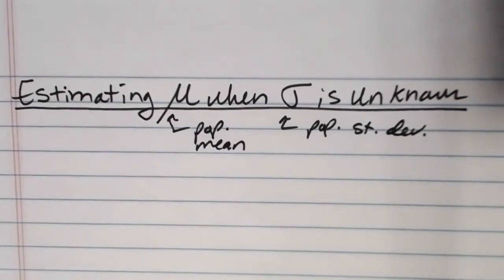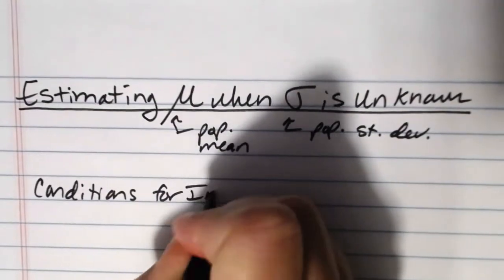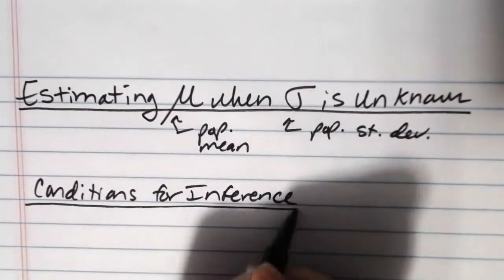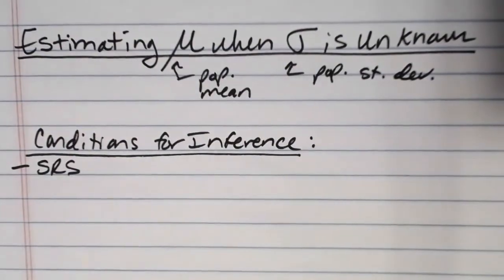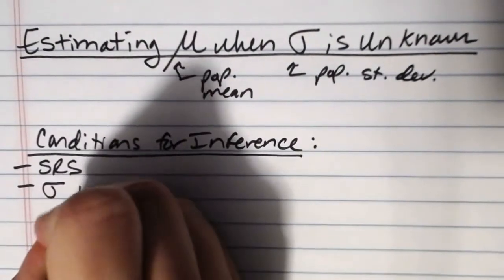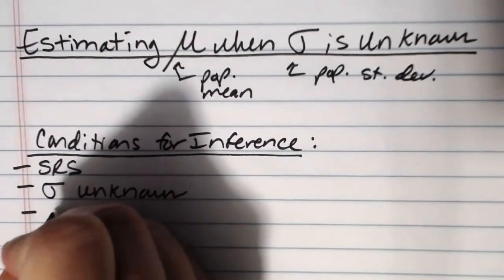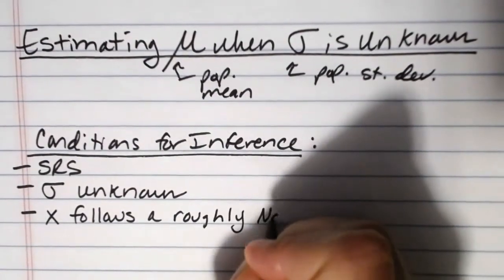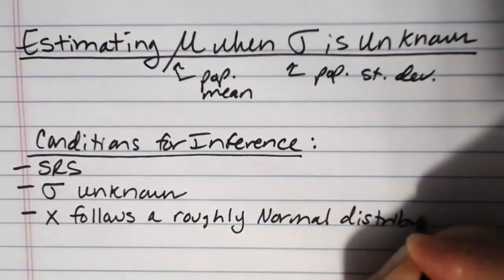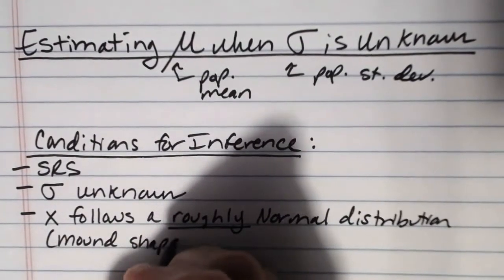And the conditions for inference here for creating a confidence interval are pretty much the same as they were when we knew sigma. We still need a simple random sample. Here though we need sigma to be unknown with the method that we're going to talk about. And then we still need the problem to say something about x follows a roughly normal distribution. And here when sigma is unknown it can actually be quite rough. It's enough for it to just be mound-shaped and symmetric.